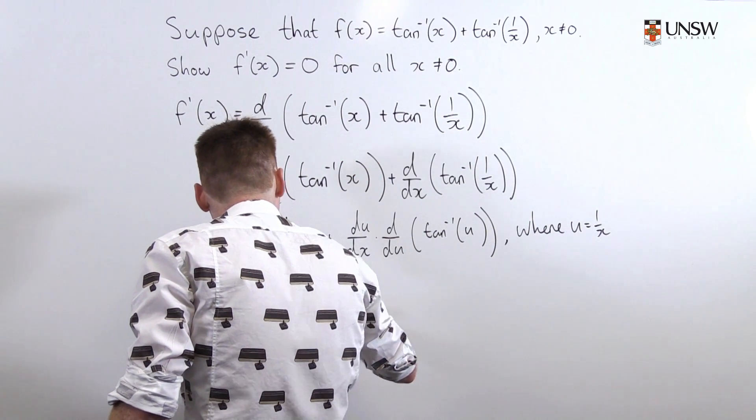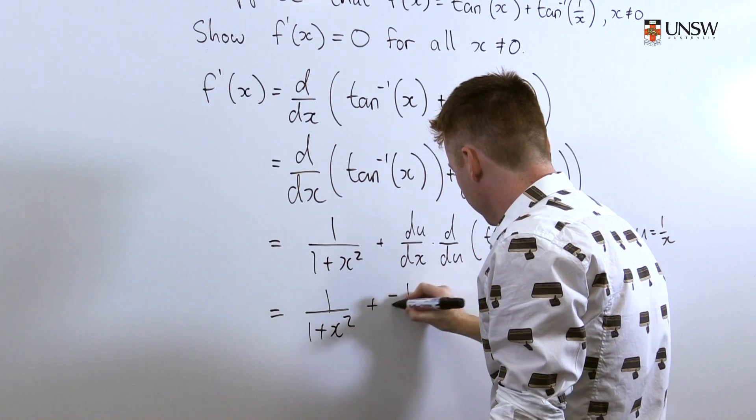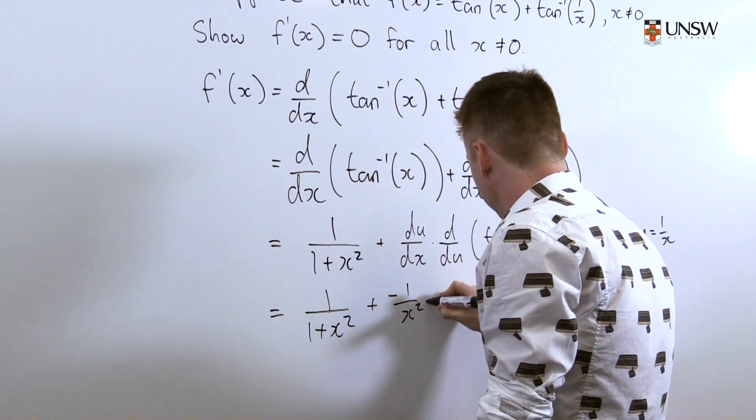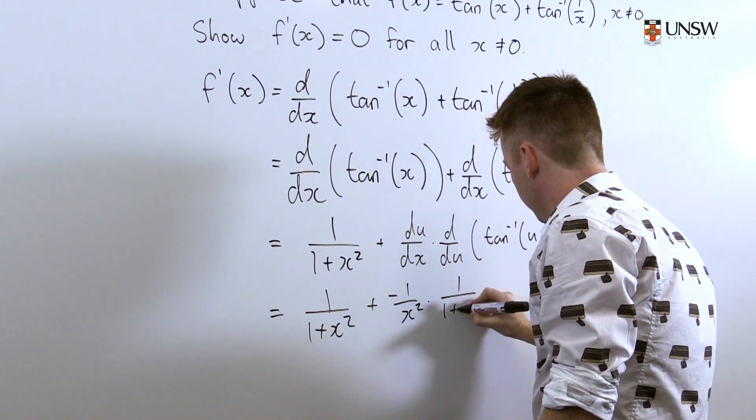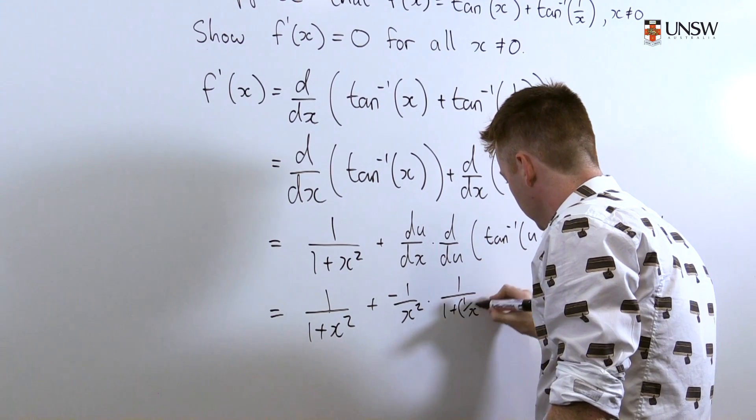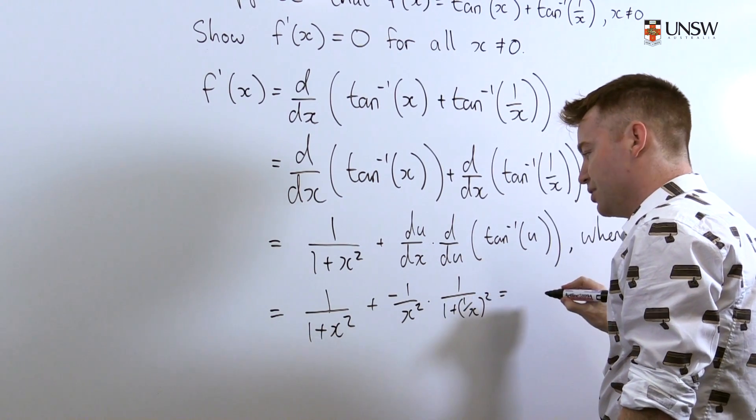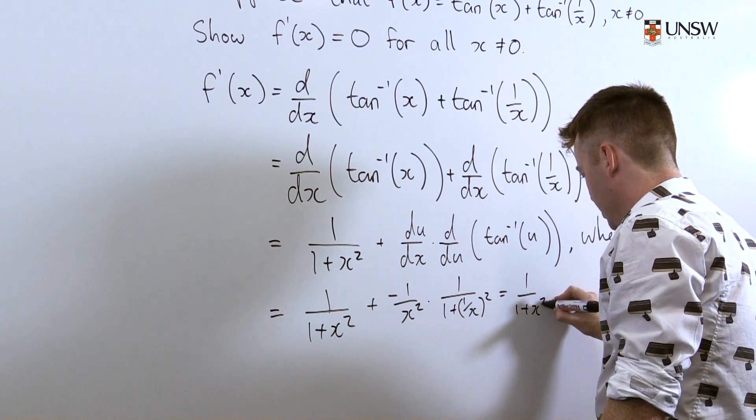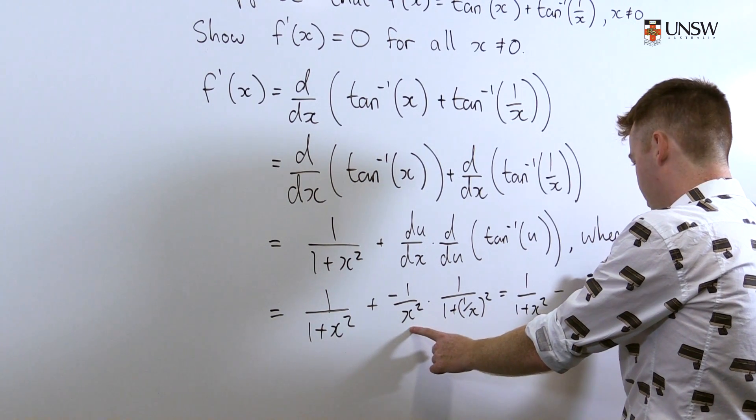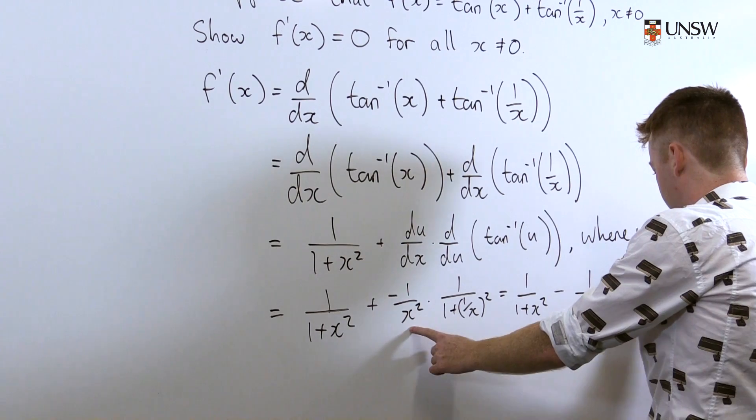And this is equal to 1/(1 + x²) plus -1/x² times by 1/(1 + (1/x)²). Which is equal to 1/(1 + x²). And this becomes -1/(1 + x²) which is 0.